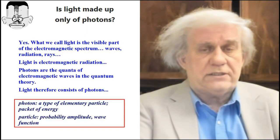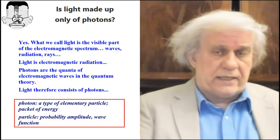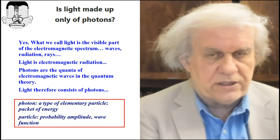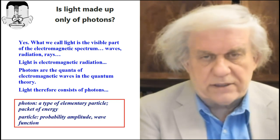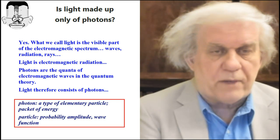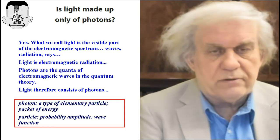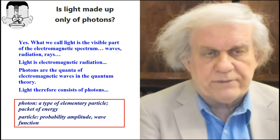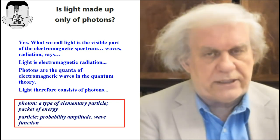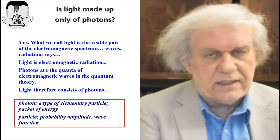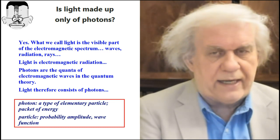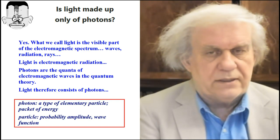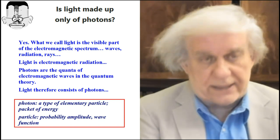Here we have him on light. Is light made up of photons? I looked at it and said, let's see what he says about light. He came up with this question and says, yes, what we call light is the visible part of the electromagnetic spectrum: waves, radiation, rays. Those are the words he used. The problem is there is no physical object called waves, radiation, or rays. So he's saying light is a concept.